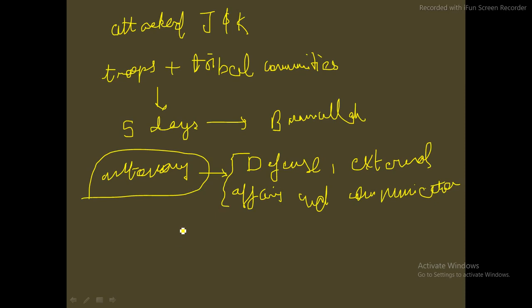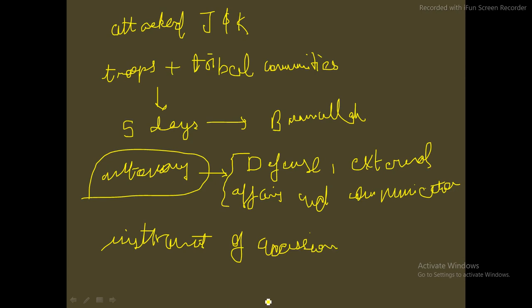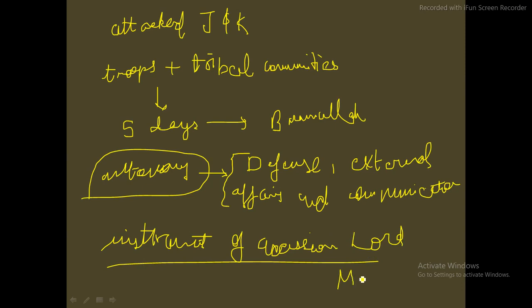Finally Maharaja Hari Singh signed the Instrument of Accession. He wanted maximum autonomy, and India agreed to that — only taking control of three things: defense, external affairs, and communication. The rest remained autonomous with Maharaja Hari Singh. Pakistan refused this internationally valid accession, which was also signed under Governor Lord Mountbatten.